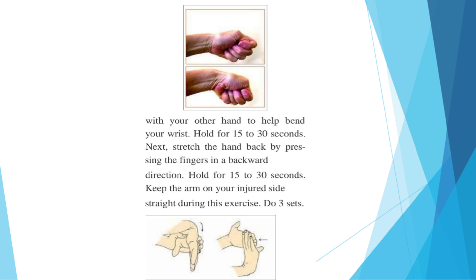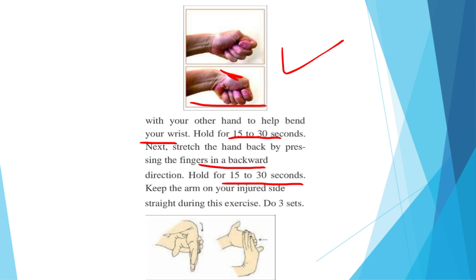For the wrist stretch: press the back of your hand on the injured side with your other hand to help bend your wrist. This position also serves as a test for De Quervain's Tenosynovitis, as the patient feels pain on the lateral side. Hold this position for 15 to 30 seconds. Then stretch the hand back by pressing the fingers in a backward direction and hold for 15 to 30 seconds.